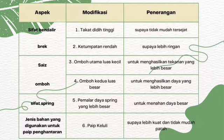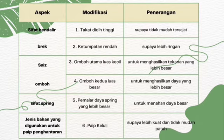Dari segi saiz omboh pula, omboh utama haruslah mempunyai luas yang kecil untuk menghasilkan tekanan yang lebih besar, manakala omboh kedua mestilah mempunyai luas yang lebih besar untuk menghasilkan daya yang lebih besar.